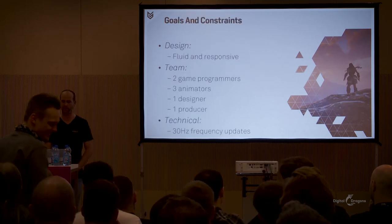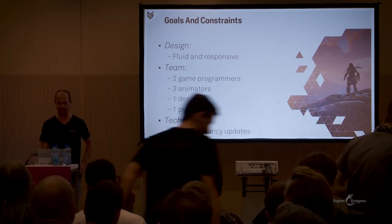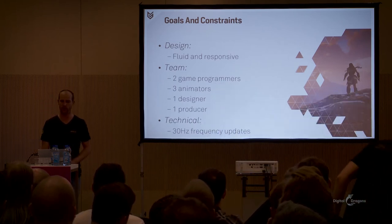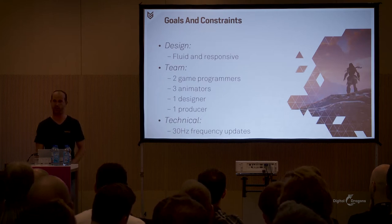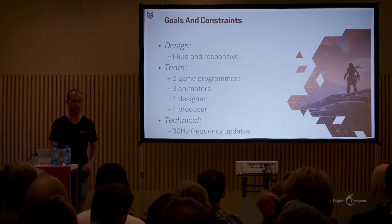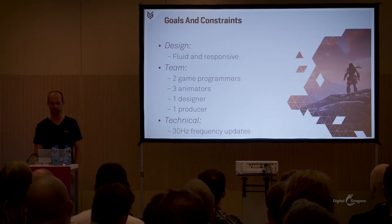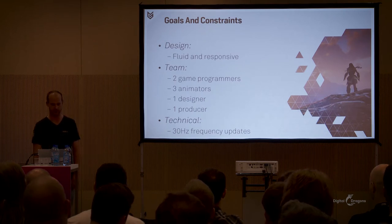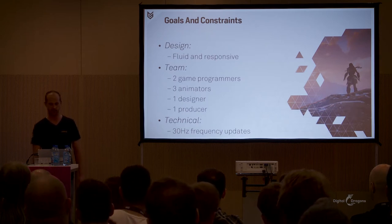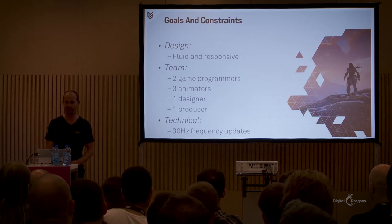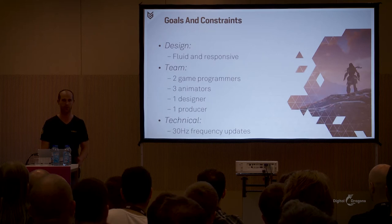I'd like to say a few things about the goals and constraints we had for player traversal at the start of the project. From the design point of view, the overall requirement was to have responsive and fluid movement. Horizon is an open-world action RPG, so responsiveness has a big influence on the actual gameplay. The traversal development team consists of two programmers, three animators, one designer, and one producer. From a technical point of view, everything needed to run at a minimum of 30 FPS, and as the terrain is mostly procedurally generated, we had to make sure all movement would work properly everywhere in the world.